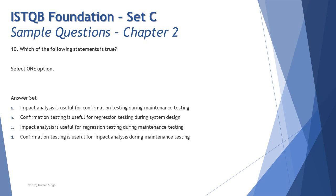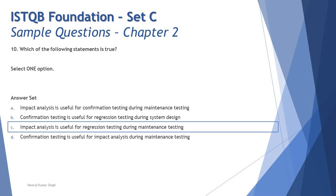Option C: 'Impact analysis is useful for regression testing during maintenance testing.' This is exactly true — impact analysis helps minimize regression testing effort by identifying which areas are affected by a change, enabling a limited and targeted set of tests. Option D mirrors Option A with words rearranged but carries the same incorrect meaning. The correct answer is C.